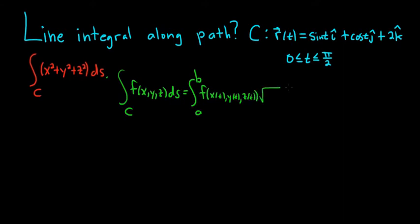Then we have a big square root, and here we have x prime of t squared, plus y prime of t squared, plus z prime of t squared, dt.